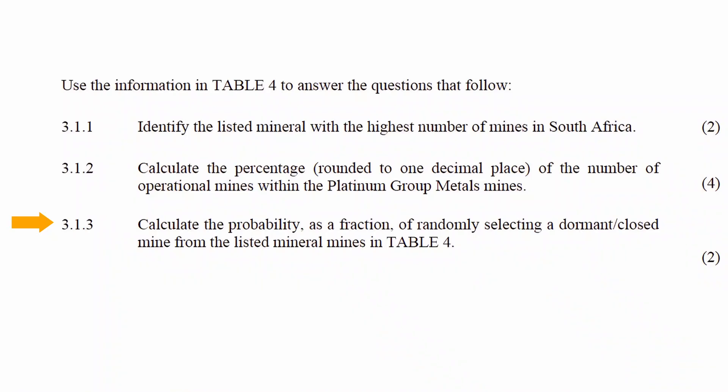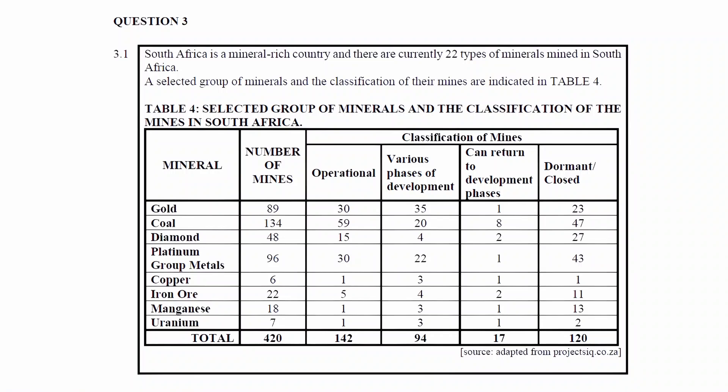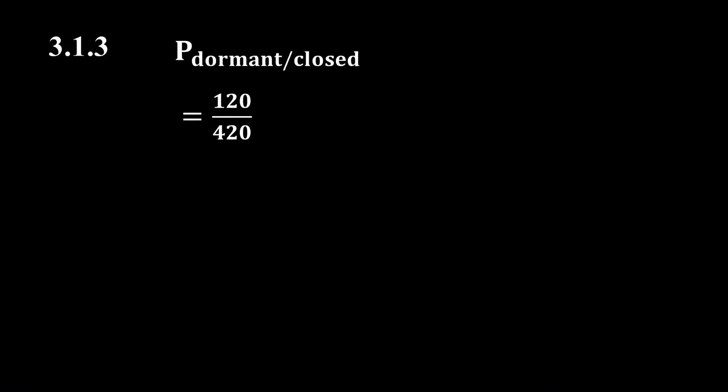In question 3.1.3, you have to calculate the probability as a fraction of randomly selecting a dormant or closed mine from the listed mineral mines in Table 4. There are 120 dormant mines out of a total of 420 mines, giving a fraction of 120 over 420. Simplifying by dividing both by 60 gives a simplified fraction of 2 over 7.